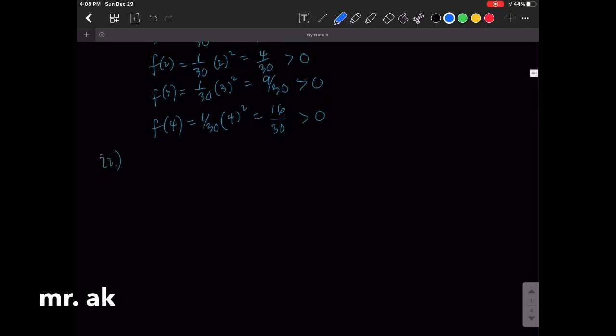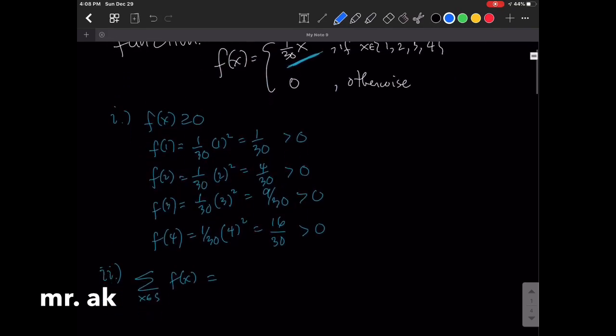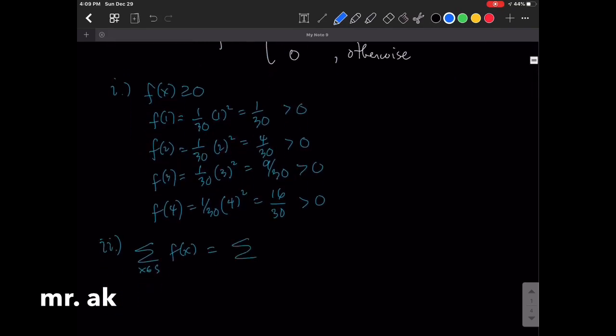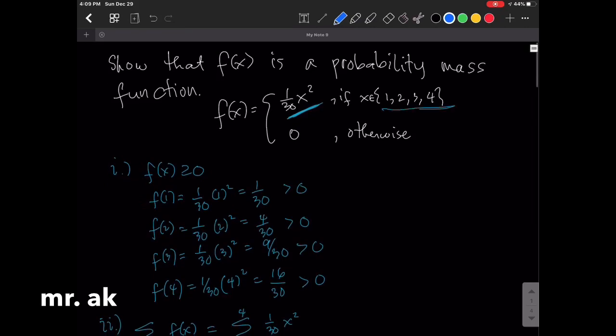The second condition is that the sum of all probabilities should be equal to 1. So the sum of f of x, x in the support equals, that's our function, so that's the sum of 1 over 30 x squared, x equals 1 to 4, because our support runs from 1 to 4.